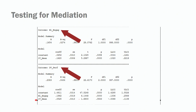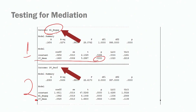Everything looks good. Let's take a look at the coefficients. We have two steps. In the first step, we need to see if the independent variable predicts our mediator — what's the relationship between meaningfulness and engagement? We do find that meaningfulness has a significant relationship with engagement; p is less than 0.05. In the second step, we look at the relationship between our mediator and our dependent variable — job engagement and performance — and we also find a significant relationship between engagement and performance, with p less than 0.05.